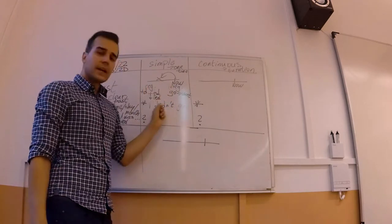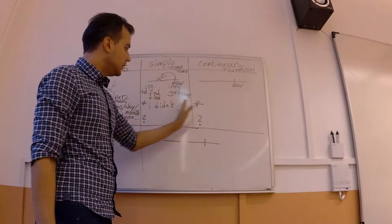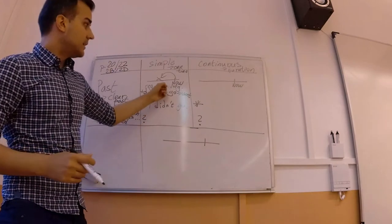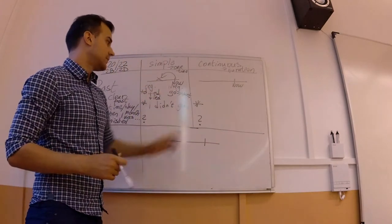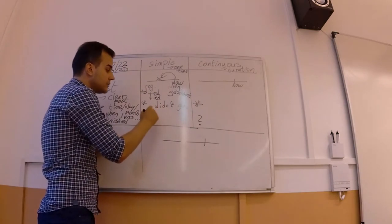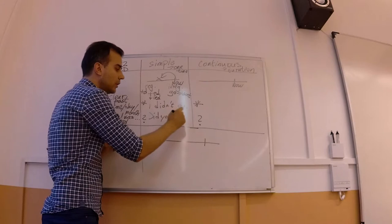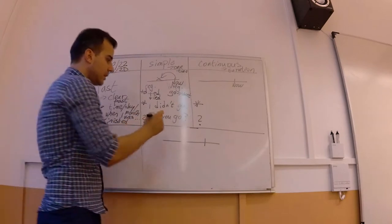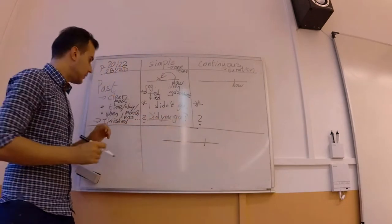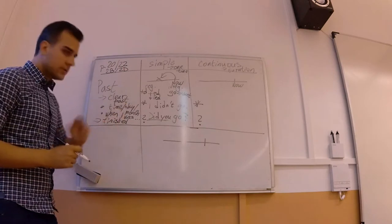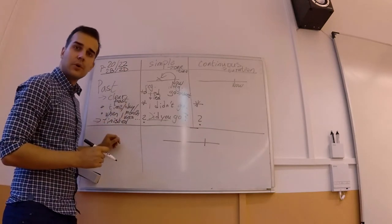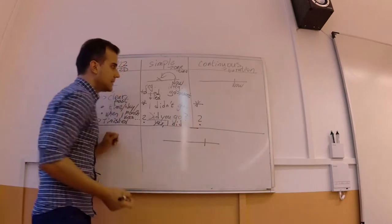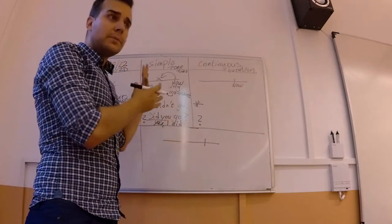You cannot say 'I didn't went' because you can only have one past tense marker on each verb. So you say 'I went' or 'I didn't go.' For questions, you ask 'Did you go?' and the answer would be 'Yes, I did' or 'No, I didn't.' This is something you should know from 1B and 1D.